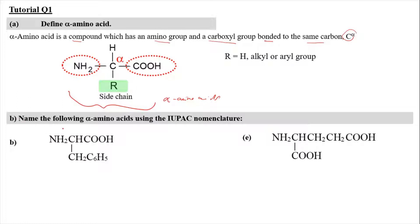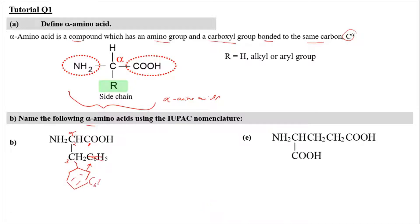For tutorial equation 1b, we have to name the following alpha amino acid using IUPAC nomenclature. Here is the alpha carbon. We have to find the longest carbon chain first. The longest carbon chain is going to be 1, 2, 3 — the ring is not considered part of the longest chain because it can be imagined as a substituent at carbon number 3, which is a phenyl group.